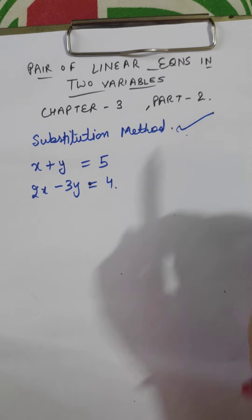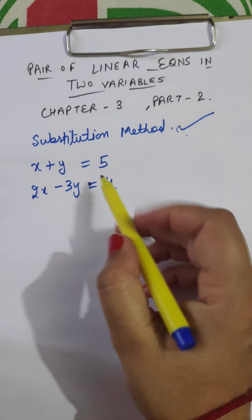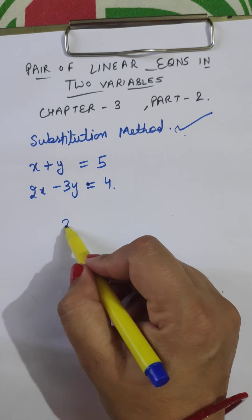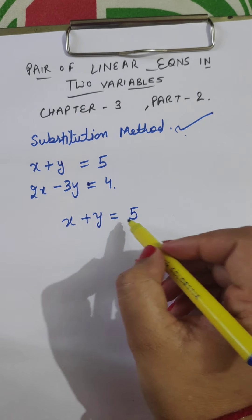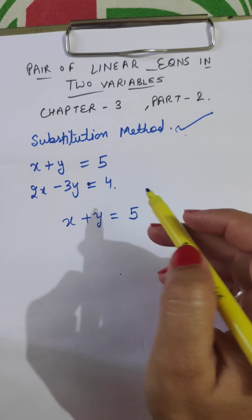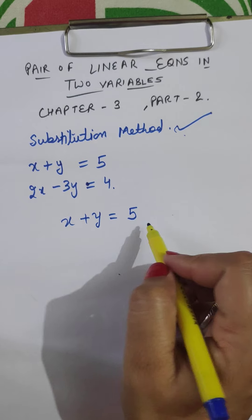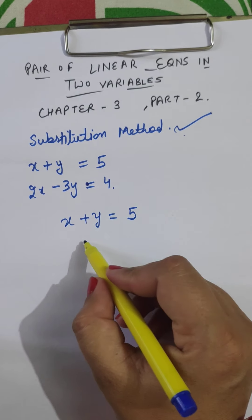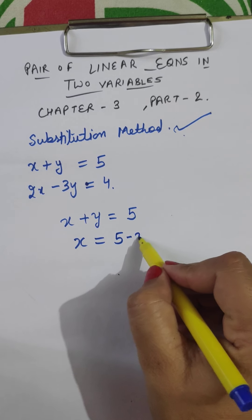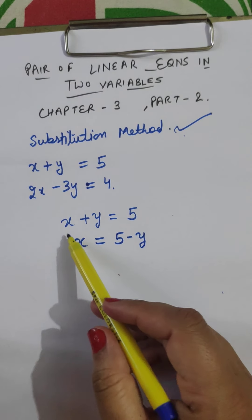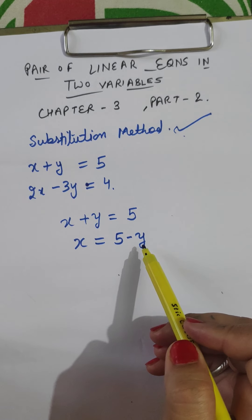Now, by solving using the substitution method — this method is very simple. We take the equation which is the simplest among the two. So we took the simpler equation: x plus y equals 5. Here I have solved for one variable, so x equals 5 minus y, by transposing minus y to the other side.